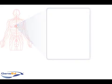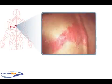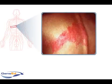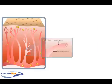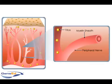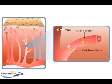Herpes zoster also targets the peripheral segment of the dorsal root ganglion. The virus travels from the dorsal root ganglion to peripheral nerves, causing shingles' characteristic rash. Once in the peripheral nerves, herpes zoster can cause peripheral demyelination and fibrosis.